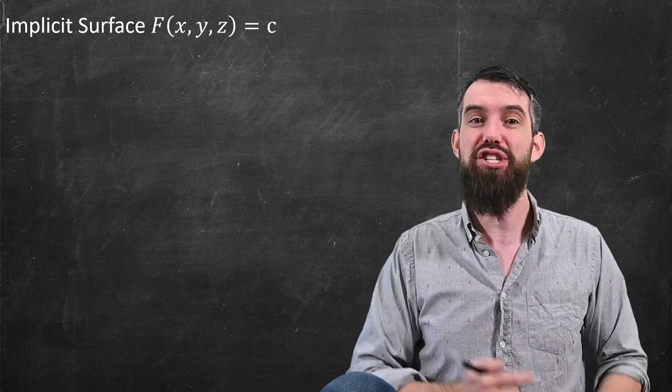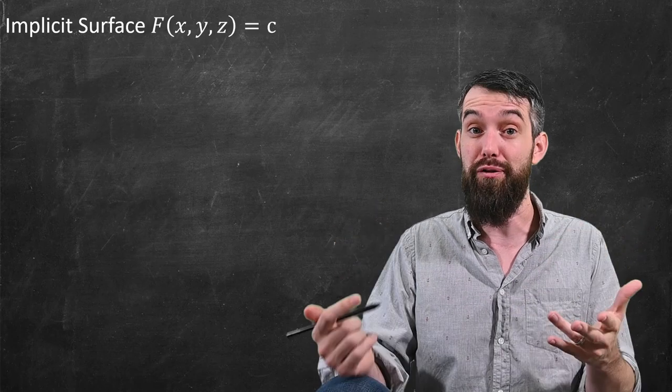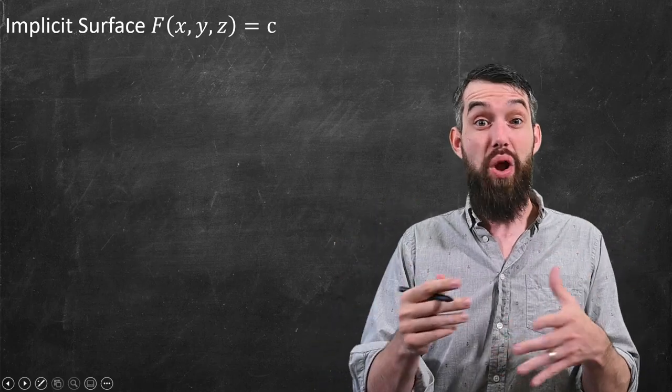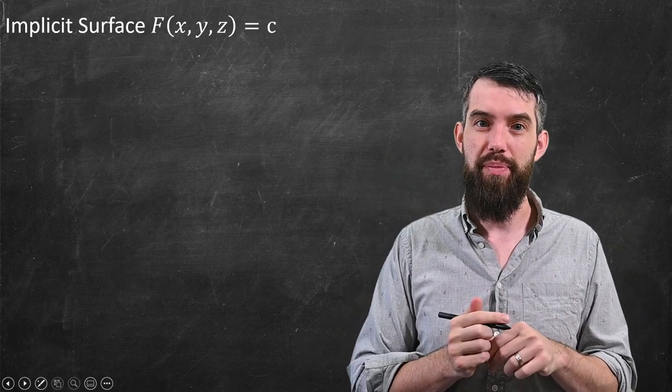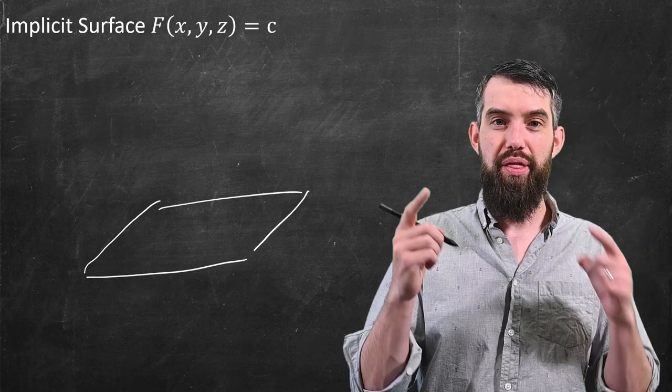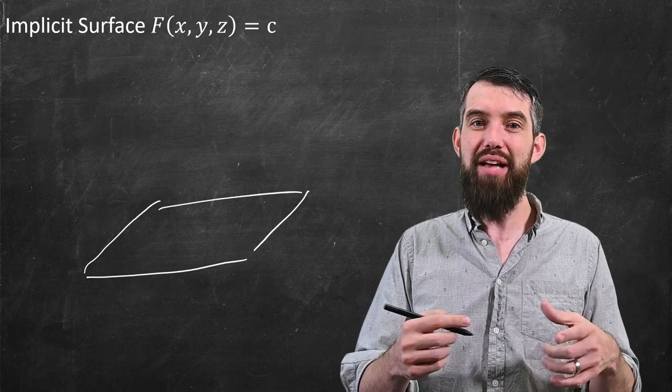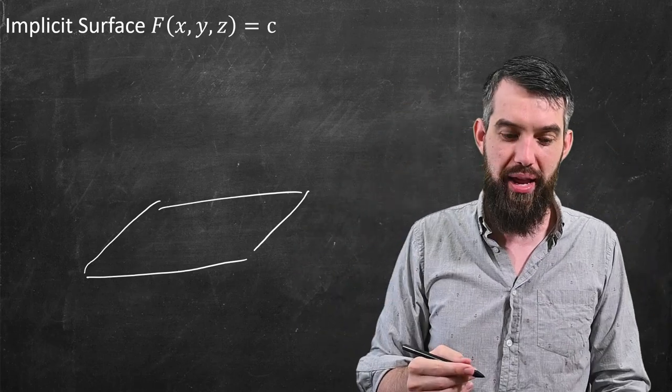So I'm going to do implicit first. Imagine I have some function F of x, y, z equal to a constant and that describes my surface. So I want to begin by trying to visualize the specific type of implicit surface I'm going to be talking about. First, I want to imagine that you have the xy plane down here. Then what I'm going to imagine is that I have some surface which is sort of above this region in the xy plane.